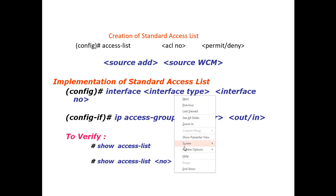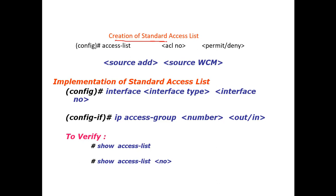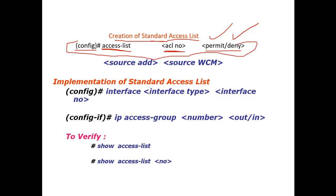This is the main creation methodology for a standard access list. To create a standard access list, you have to enter configuration mode, then specify the access list number, then provide the entry — either permit if you want to allow it, or deny if you want to block it.